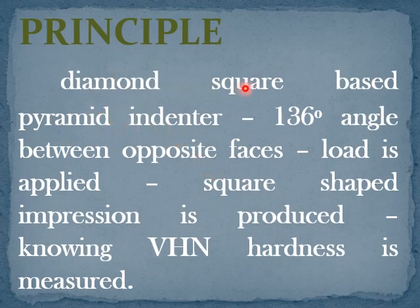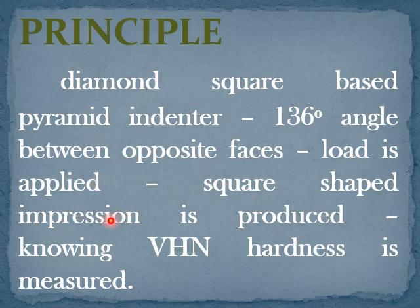The principle involved in Vickers hardness testing: a diamond square-based pyramid indenter is used whose opposite face angle is 136 degrees. A known load is applied from the top surface. A square-shaped impression is produced on the surface of the material. Knowing the Vickers hardness number, the hardness of the testing sample is measured.